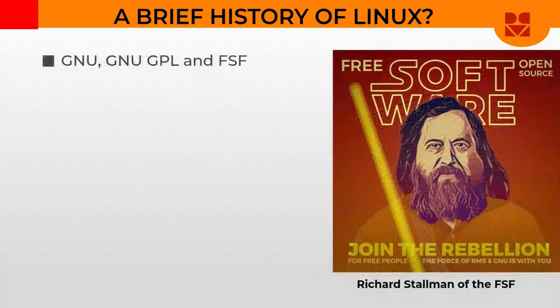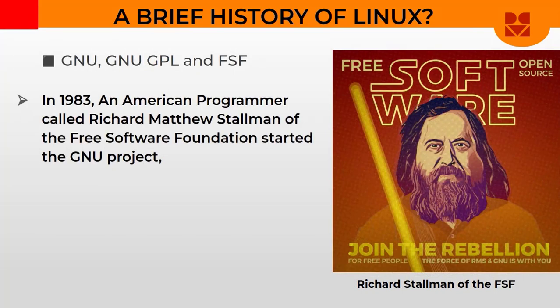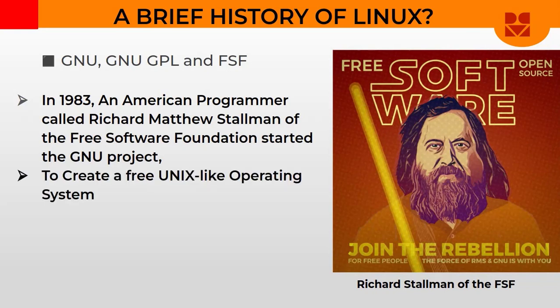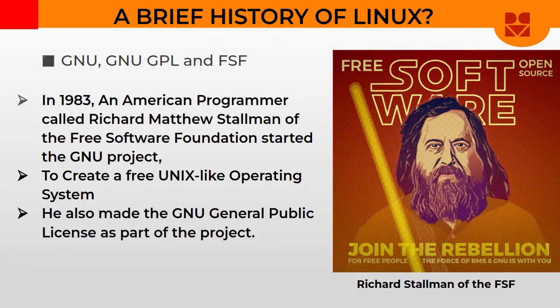At that time, Richard Stallman of the Free Software Foundation began a movement. He decided to start a project called the GNU Project. This project's intention was to create a free Unix-like operating system — one that looks like Unix, behaves like Unix, does everything like Unix, but is free, which means that anybody interested in using such an operating system can use it without paying a dime. Stallman also made the GNU General Public License, which would allow creators to publish their work.